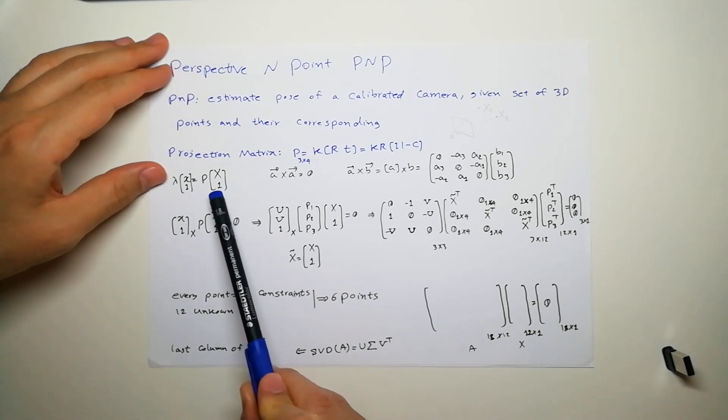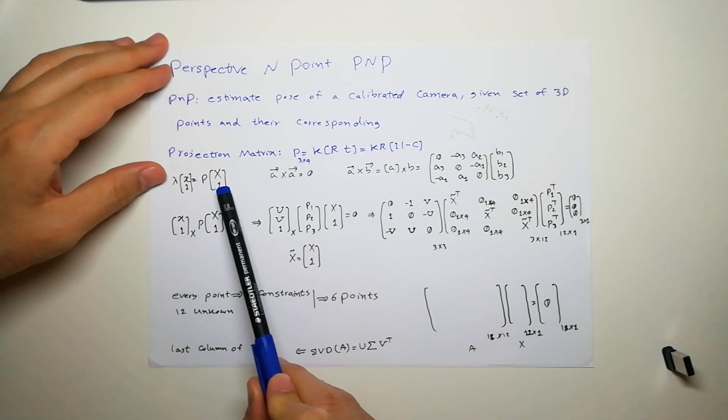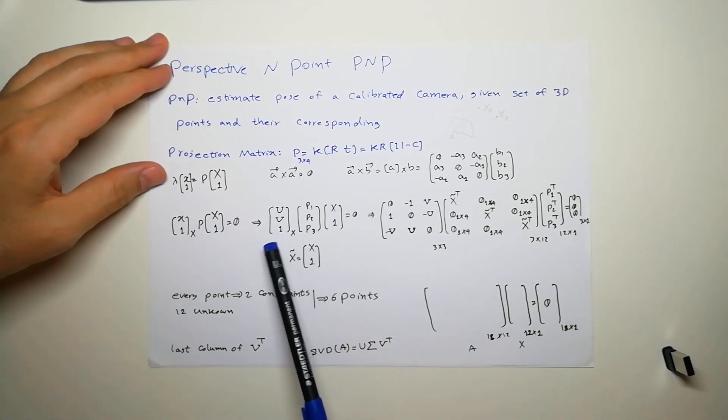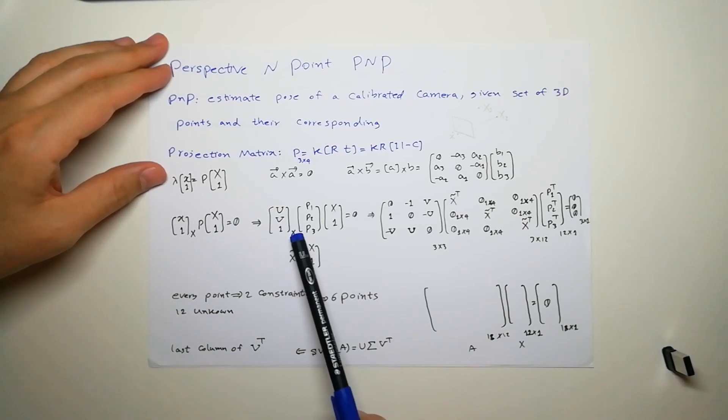I cross product both sides by this value, so it's going to be zero because I cross product by itself. It's a vector, and remember here we have a cross product and here we have a matrix multiplication. So I write this cross product as a matrix multiplication.